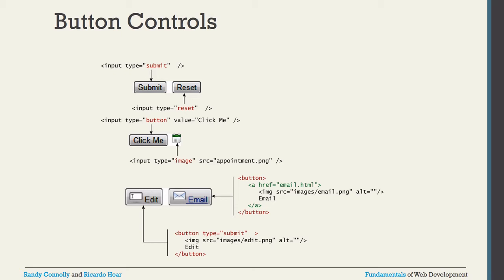For input type equal to button, you can write value equal to 'click me' and give any kind of JavaScript callback. Same way, if you want to display an image, write input type equal to image and then the src attribute with the image path. If you want to link the button to any page, you can write the button open and close tags, then inside place a hyperlink with href pointing to, for example, email.html, and in the middle display an image link.